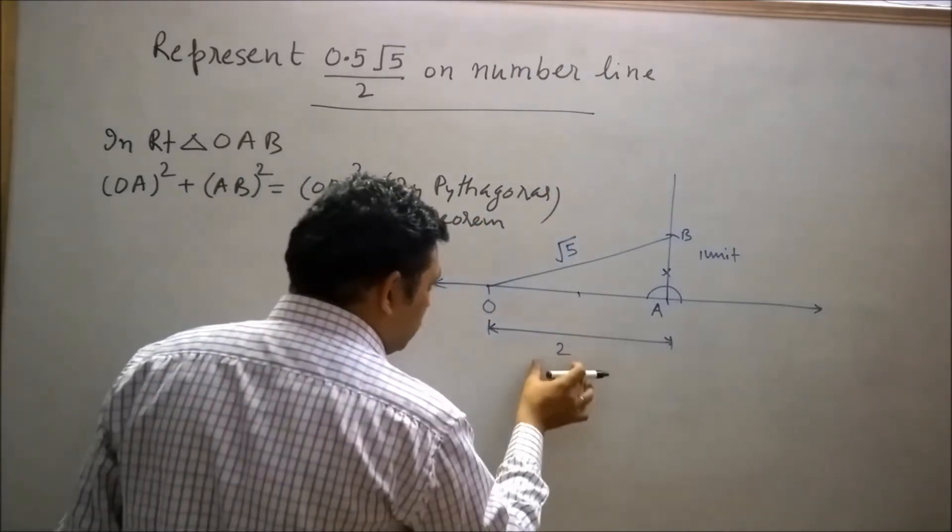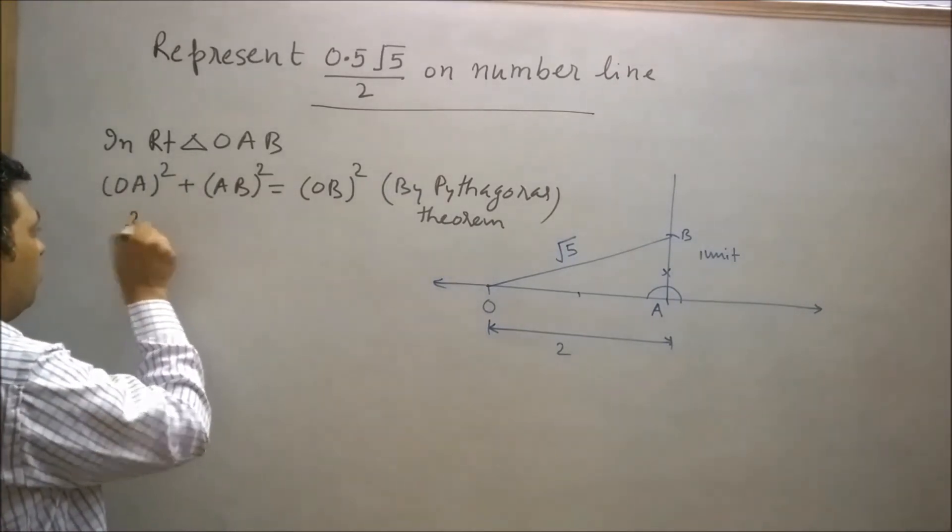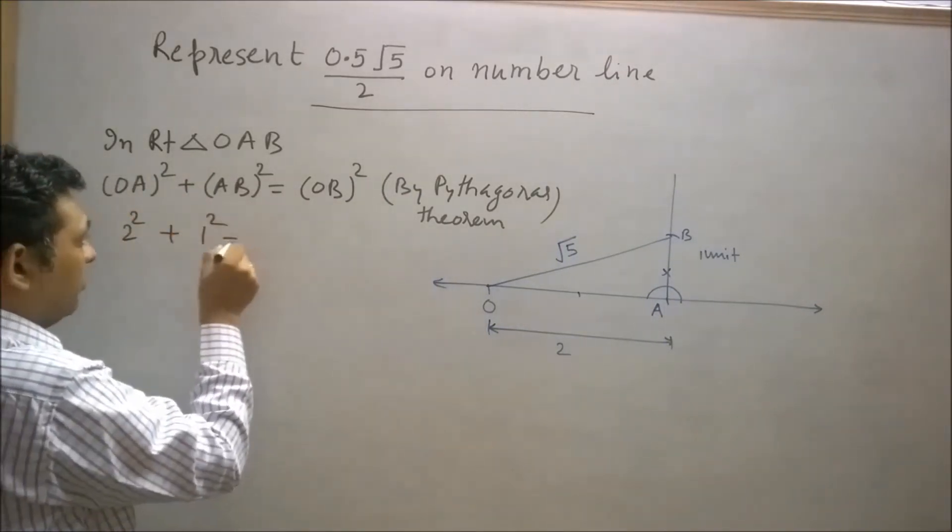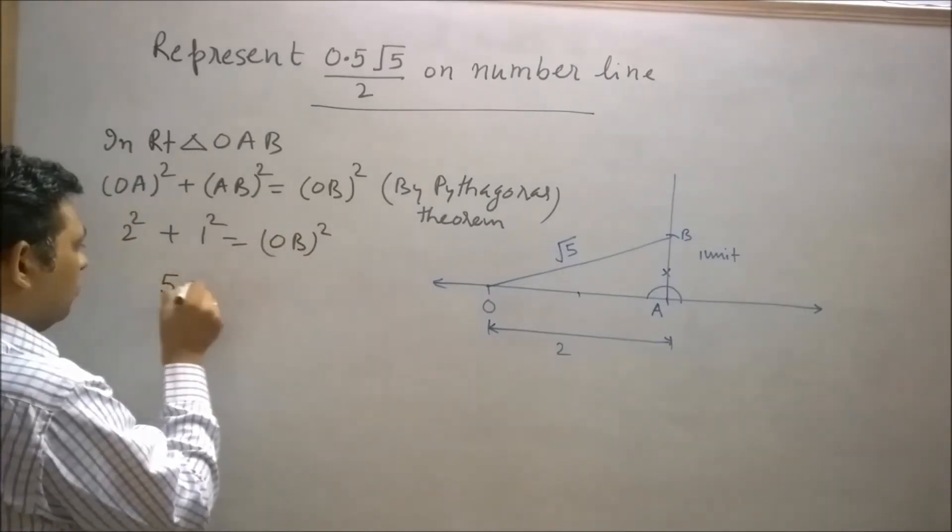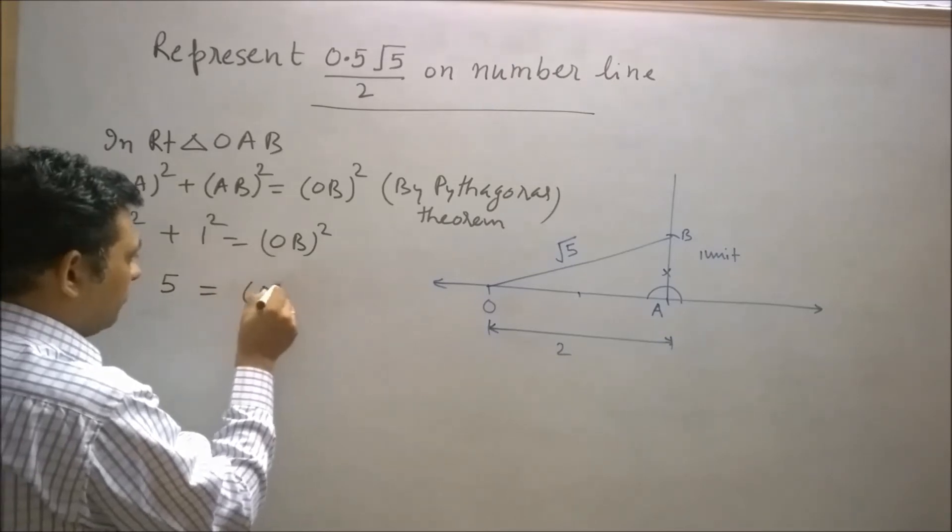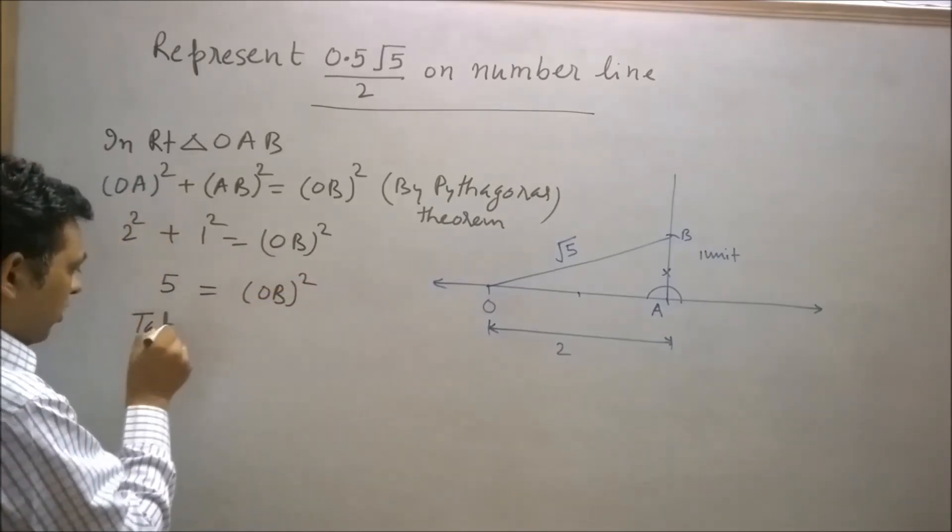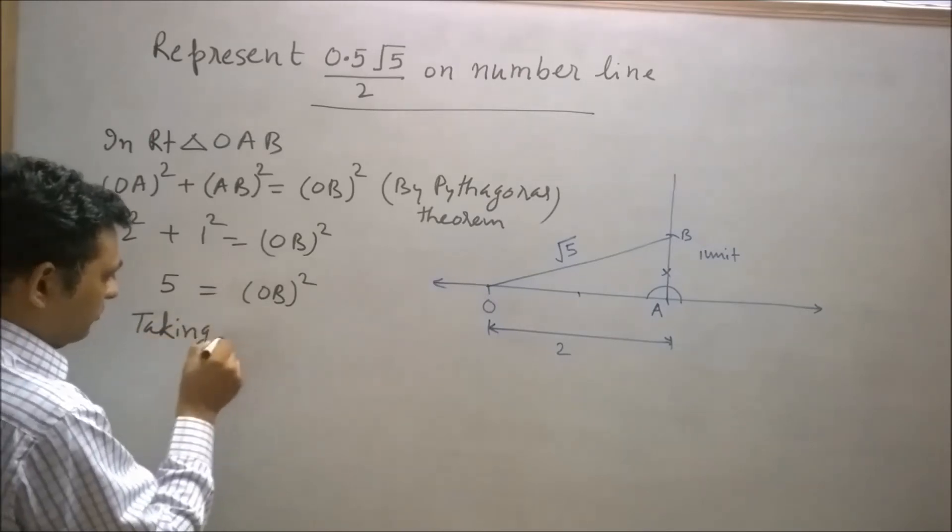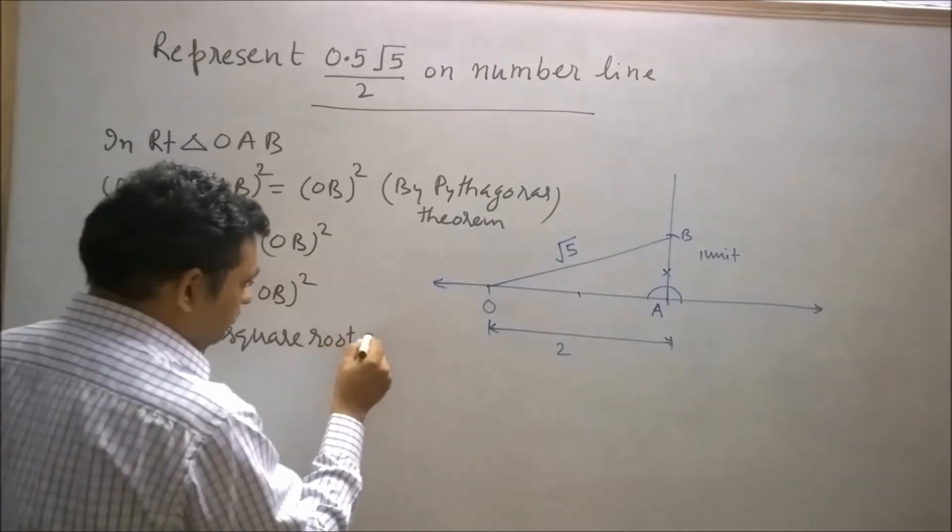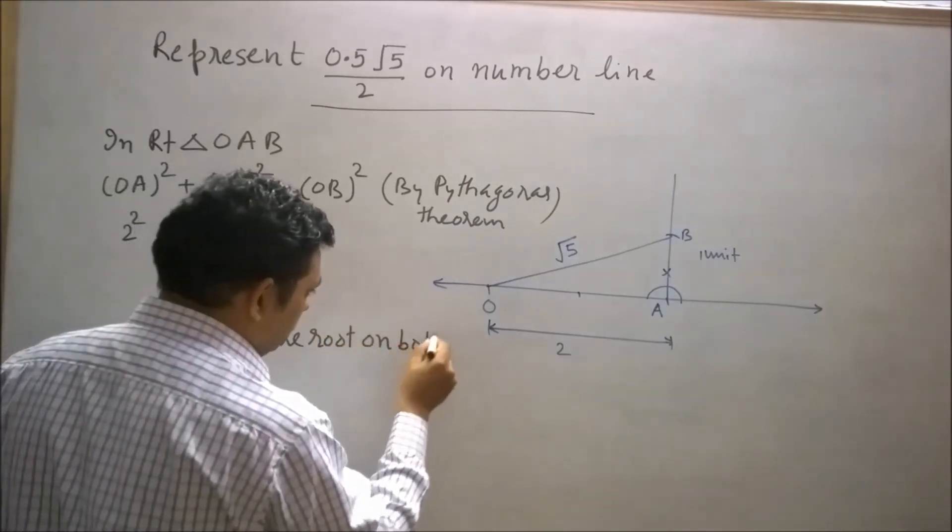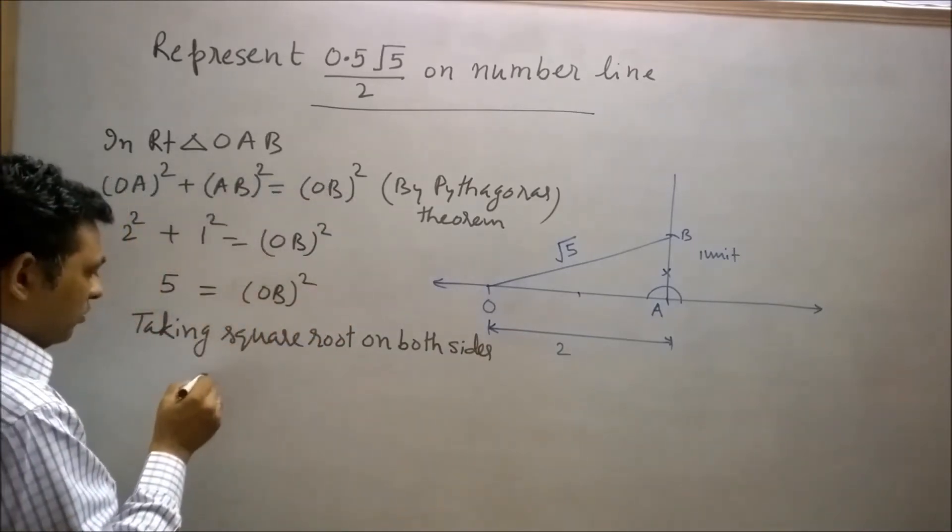Here OA is 2 units and AB is 1 unit, so square of 2 plus square of 1 will equal the square of OB. Left hand side becomes 5, so 5 equals the square of OB. Now taking square root on both sides, OB will equal √5.